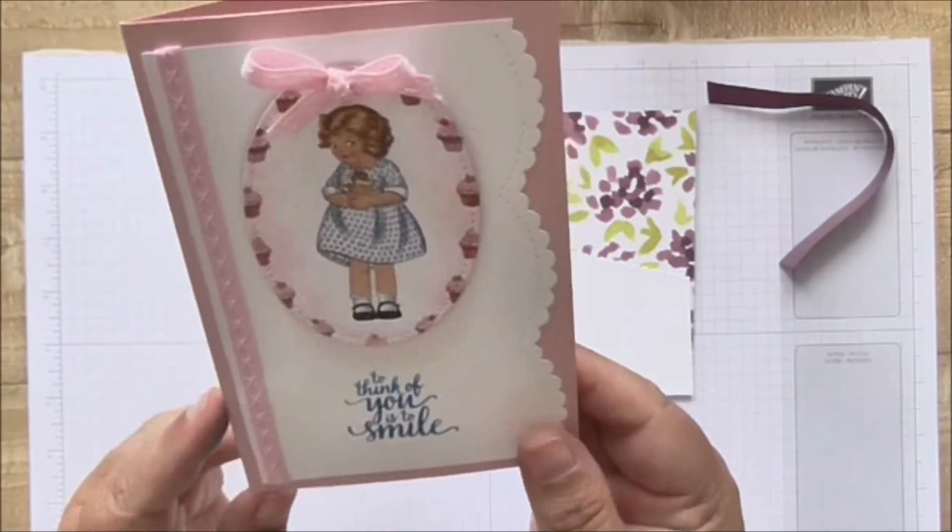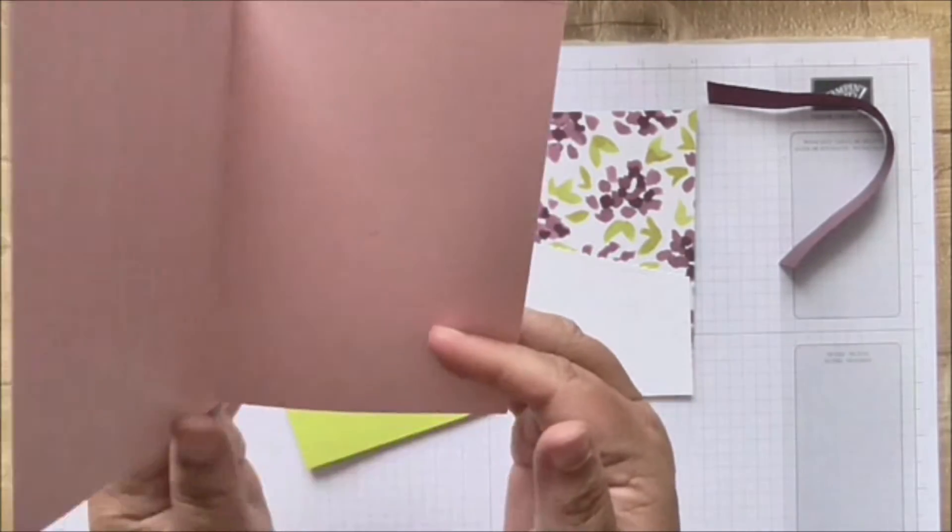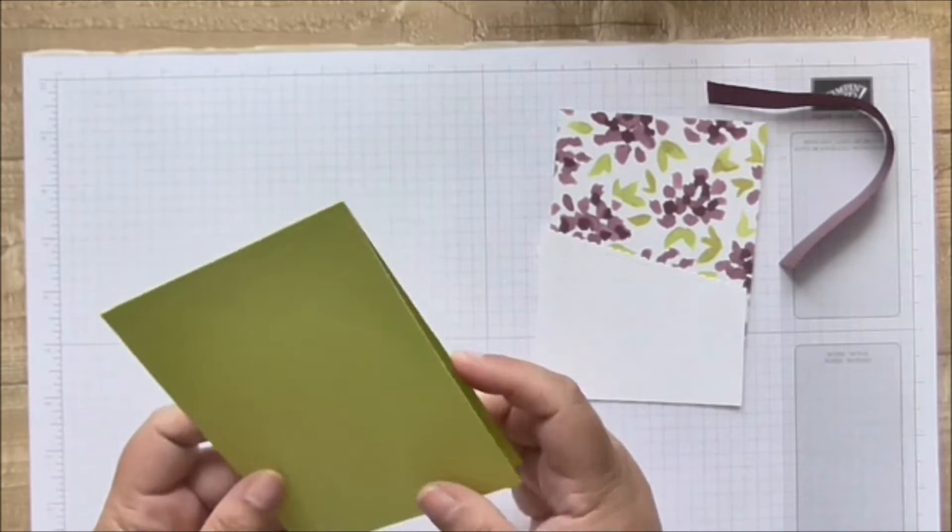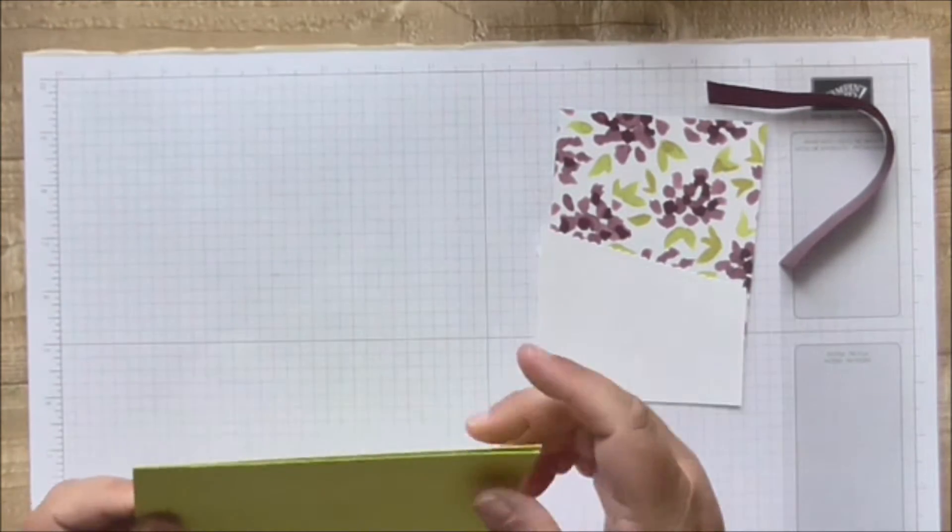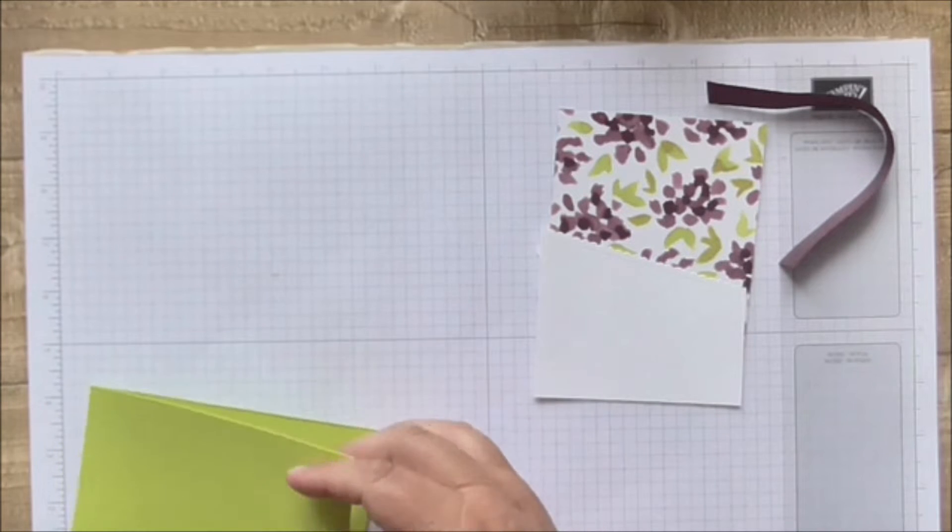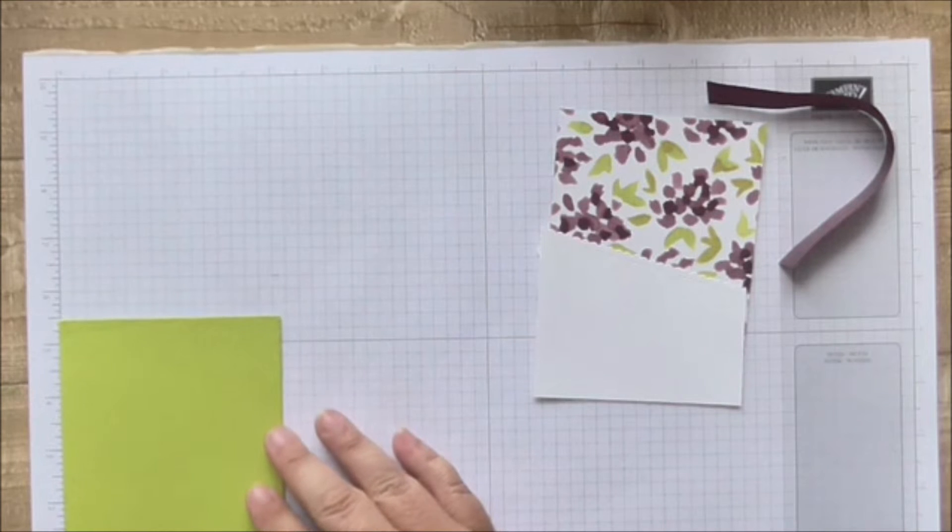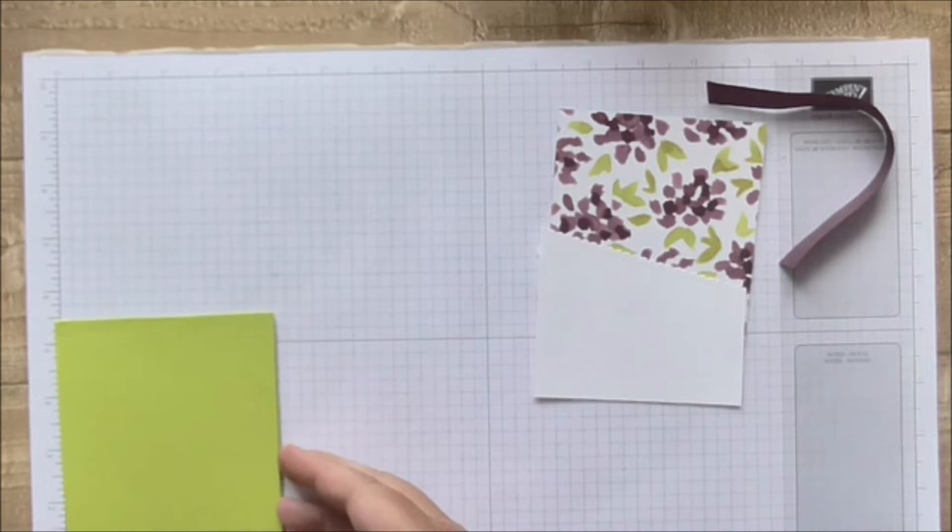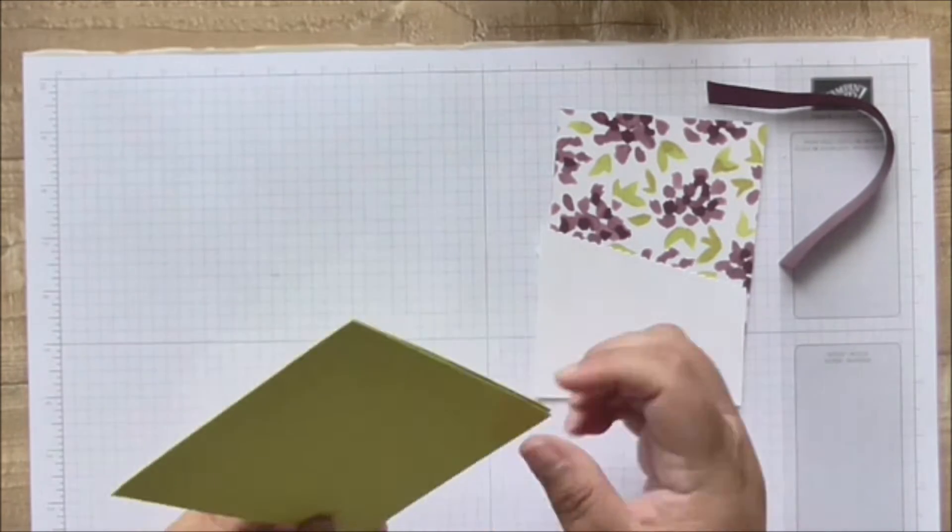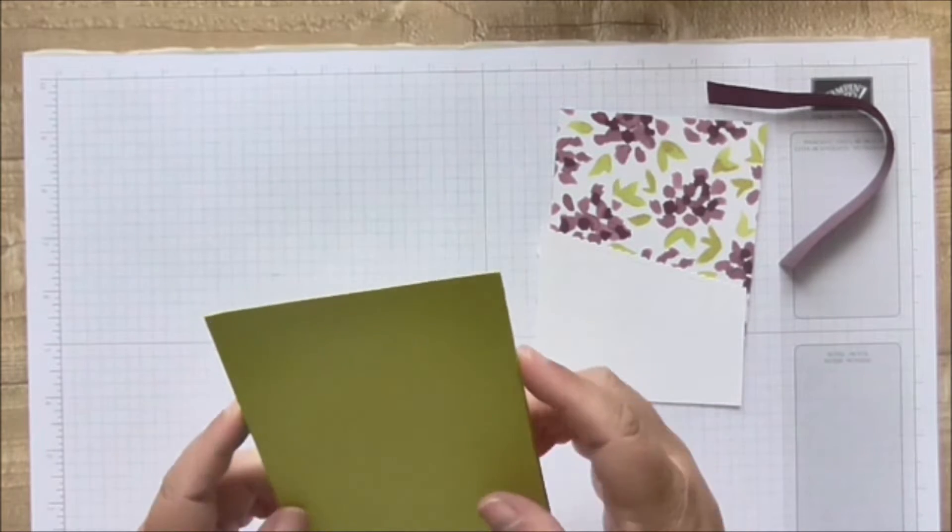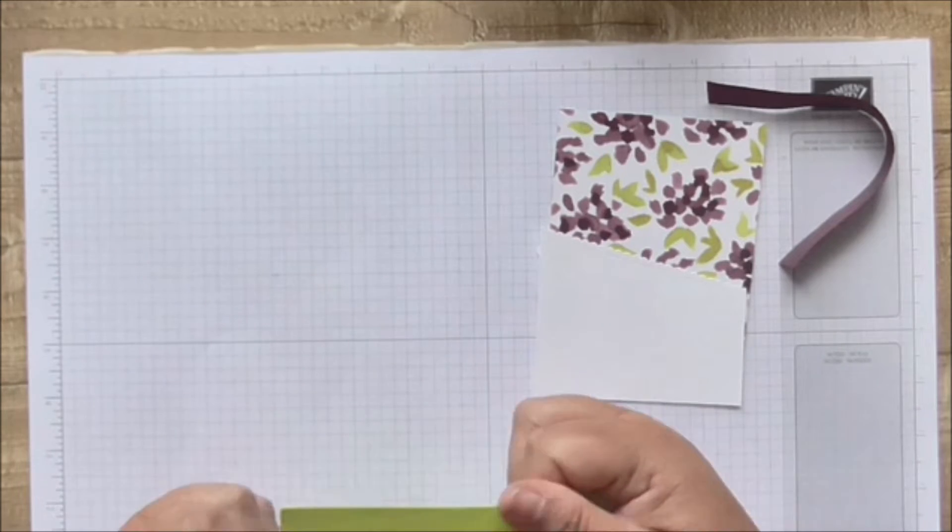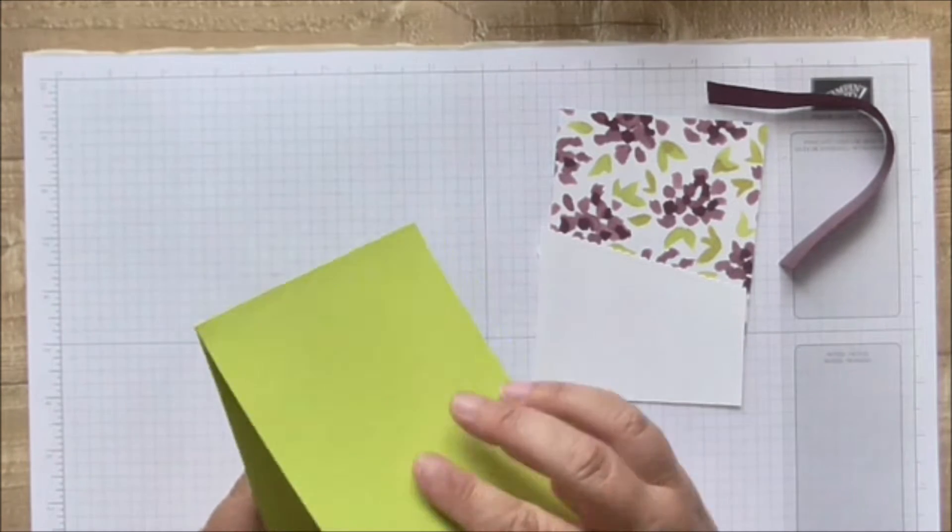So this is today's and yesterday's was this one, which was a cute little card for a little girl or a lady. Today's is much brighter. I'm using this piece of lemon lime twist which measured 11 inches by four and one eighth of an inch, so that's 28 centimeters by 10.5 centimeters. Then I just folded it in half and burnished the score line there, so that would be at 14 centimeters.